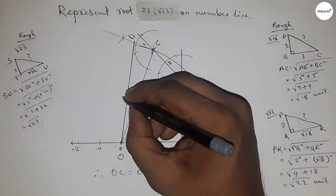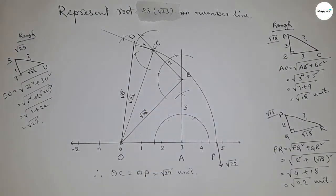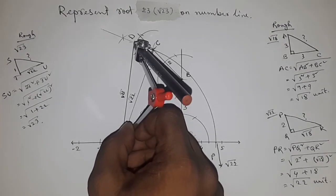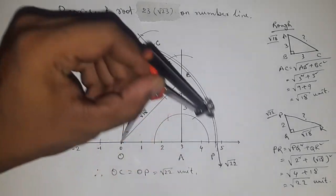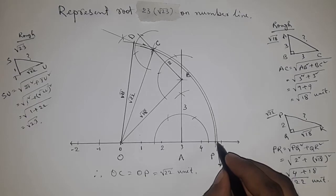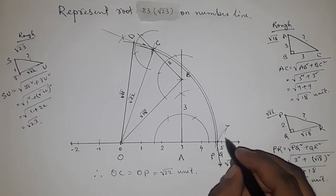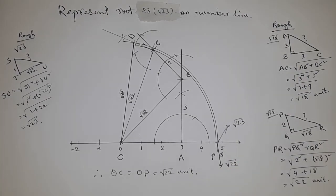From this we can say that OD equals root 23 units. Now taking the length OD by compass, drawing an arc which meets the number line at a point, and this is point Q. This is the representation of root 23 on the number line.